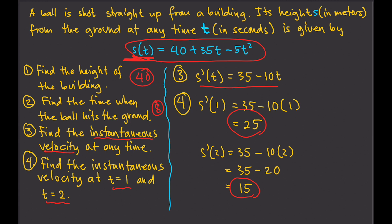That makes sense, because when you throw an object upward, it starts off fast, and then as it goes to the top it starts slowing down. So here, the ball started at around 25 meters per second, but as it makes its way to the highest point it slows down until it stops, and then it falls back down. That's it for this video.